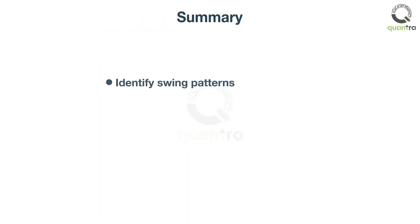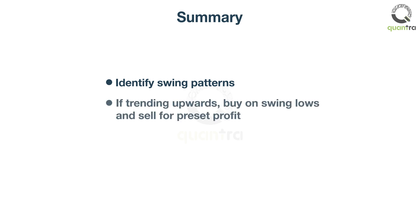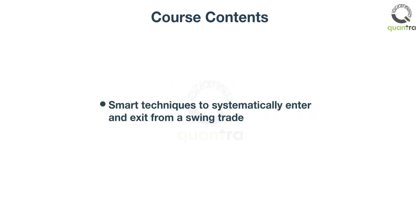To summarize: swing traders first identify swing patterns. If the stock is trending upwards, they will buy around swing lows and try to sell for a preset profit. This was a simplistic example to learn swing trading. Later in the course, you will learn about smart techniques to systematically enter and exit from a swing trade.